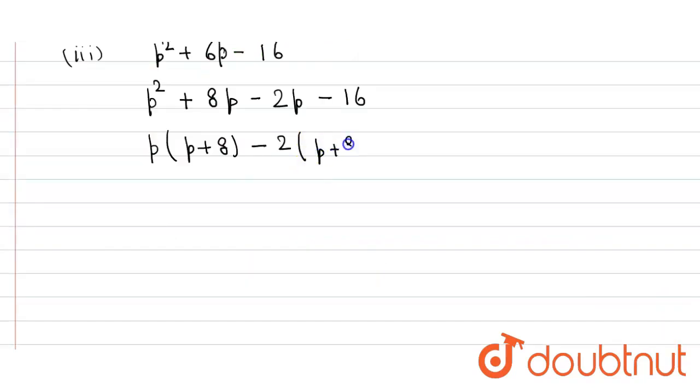Taking p + 8 common, we get (p + 8)(p - 2), and that's our answer.